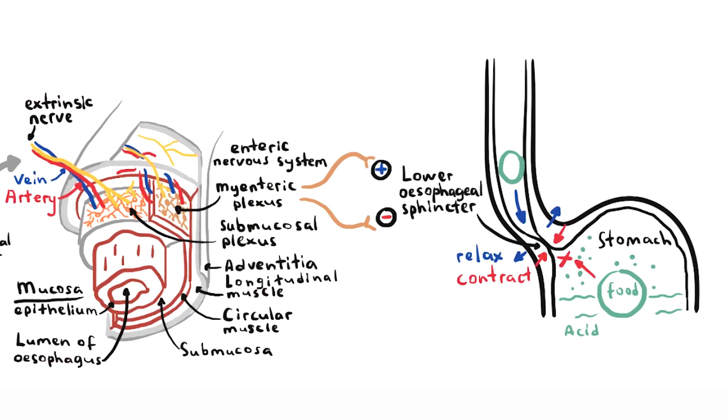Important to know that the enteric nervous system is also partly controlled by the central nervous system. The vagus nerve from the brain stem innervates the enteric nervous system, and so do sympathetic nerve fibers from the spinal cord.